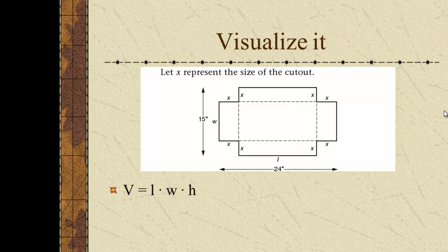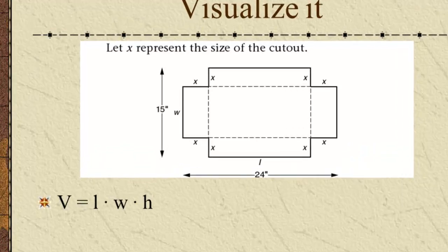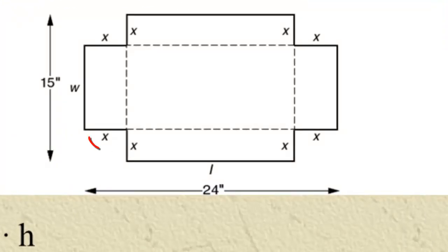The volume of a rectangular box is the length times the width times the height. We know what the length is. It's 24 inches, but you take out an x here and another x here, so it's 24 minus 2x.